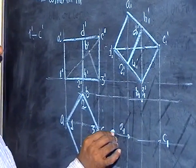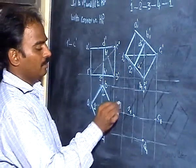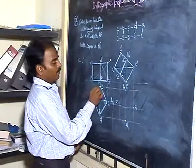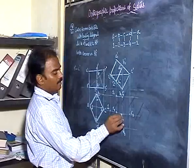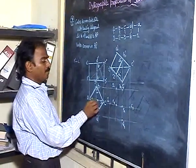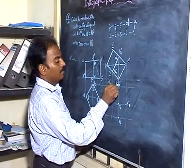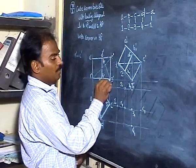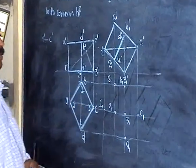Now take points 1, 2, 3, 4. 1 horizontal and 1 vertical gives you point 1 on the surface. 2 horizontal and 2 vertical gives you point 2. 3 horizontal and 3 vertical — you see 3 horizontal is available here, 3 vertical is available here. The only point lying on the HP is point 3, and that too by a corner — a corner point is 3.